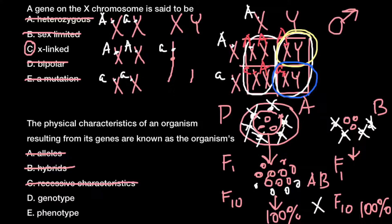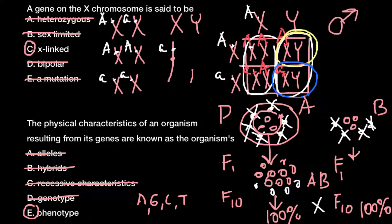Answer E: genotype is basically just a genetic sequence — we have four bases: adenine, guanine, cytosine, and thymine that can make different sequences. Different sequences mean we also look differently, and exactly how we look we call the phenotype. So phenotype is the correct answer. The physical characteristics of an organism resulting from its genes are known as the organism's phenotype — just visual characteristics that are due to different genotypes.